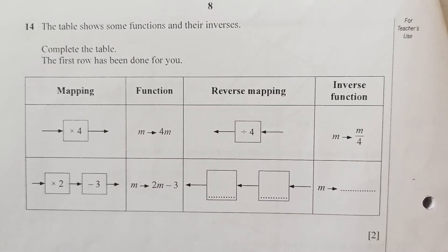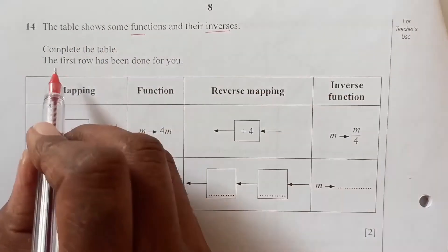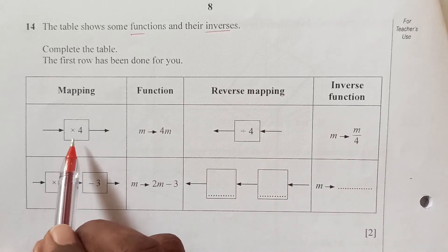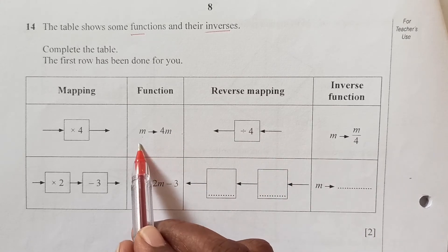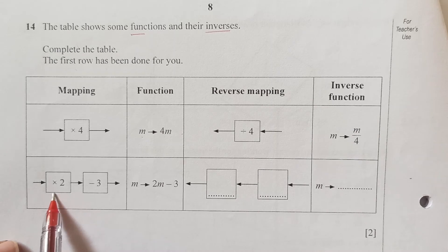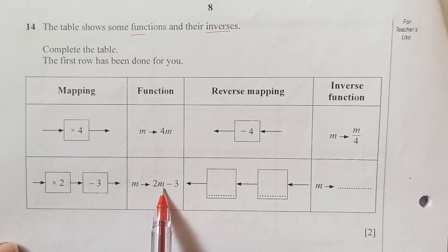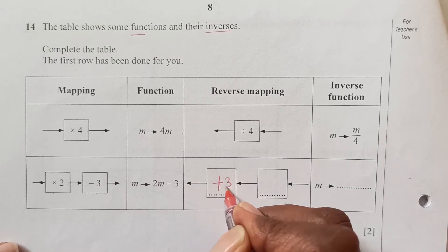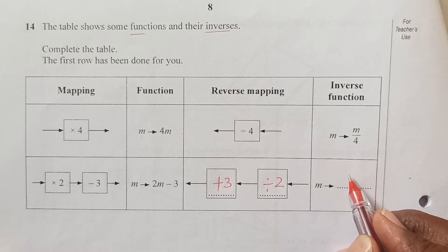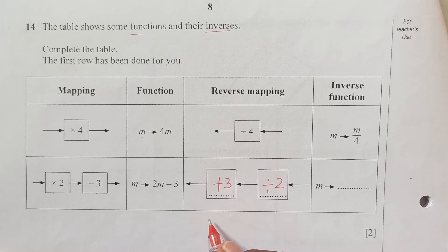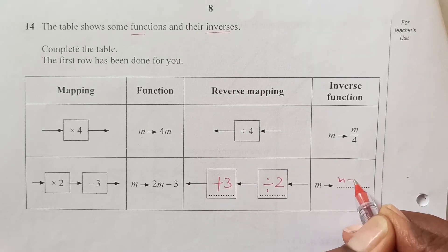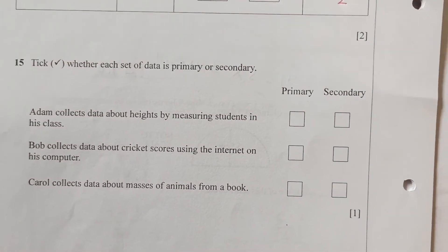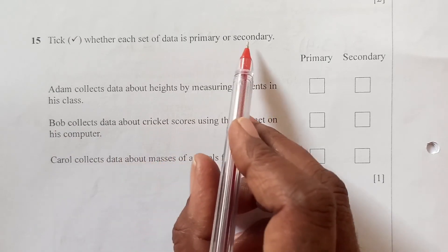The table shows functions and their inverses. For the function '×4', the inverse is '÷4', i.e., m ÷ 4. For the function '×2 − 3' (i.e., 2m − 3), reverse the operations: first +3, then ÷2, giving the inverse function (m + 3) ÷ 2.